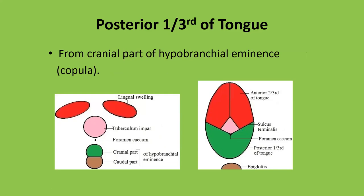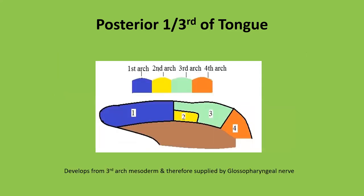The posterior one-third of the tongue is derived from the cranial part of the hypobranchial eminence, called the cupola — the green colored structure. In the formation of the posterior one-third, the third arch mesoderm comes and meets with the first arch mesoderm forming the anterior two-thirds, while the second arch mesoderm is buried underneath. The third arch mesoderm overrides it to meet the first arch mesoderm. Therefore, the posterior one-third of the tongue develops from the third arch mesoderm and is supplied by the nerve of the third arch — the glossopharyngeal nerve.